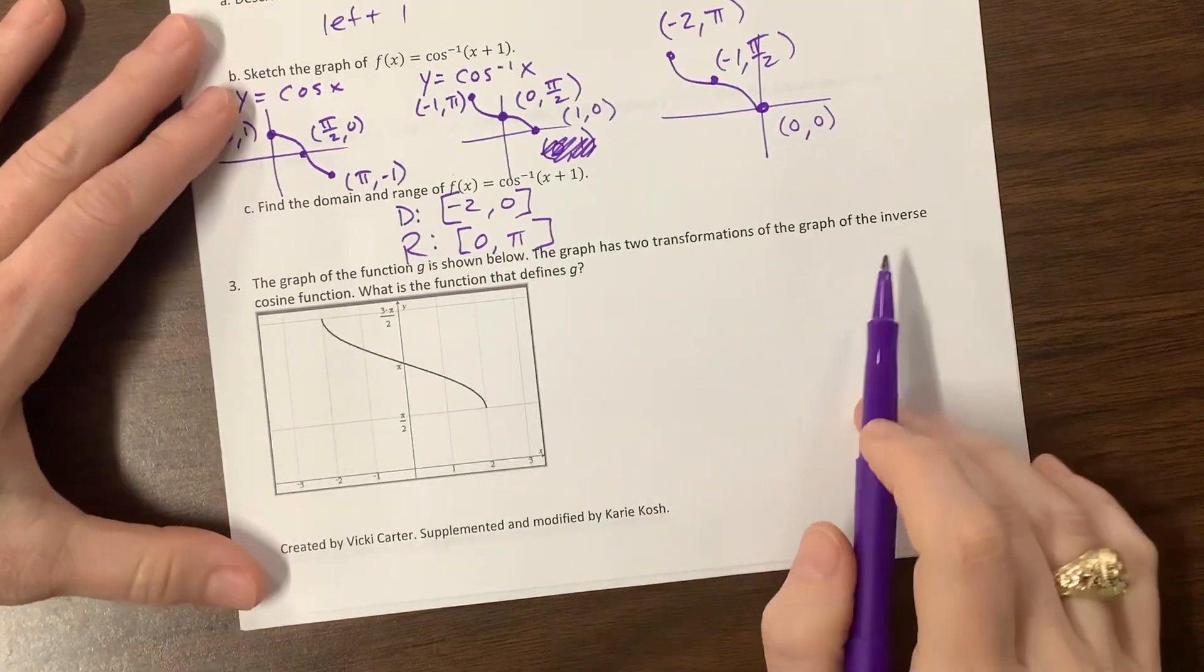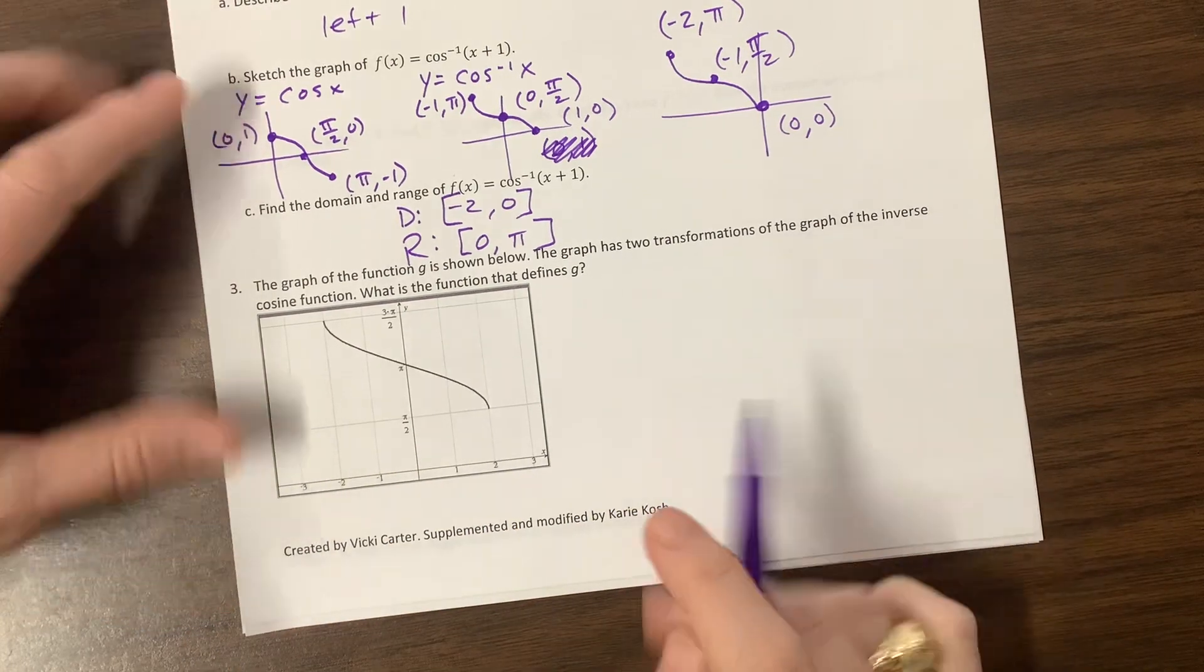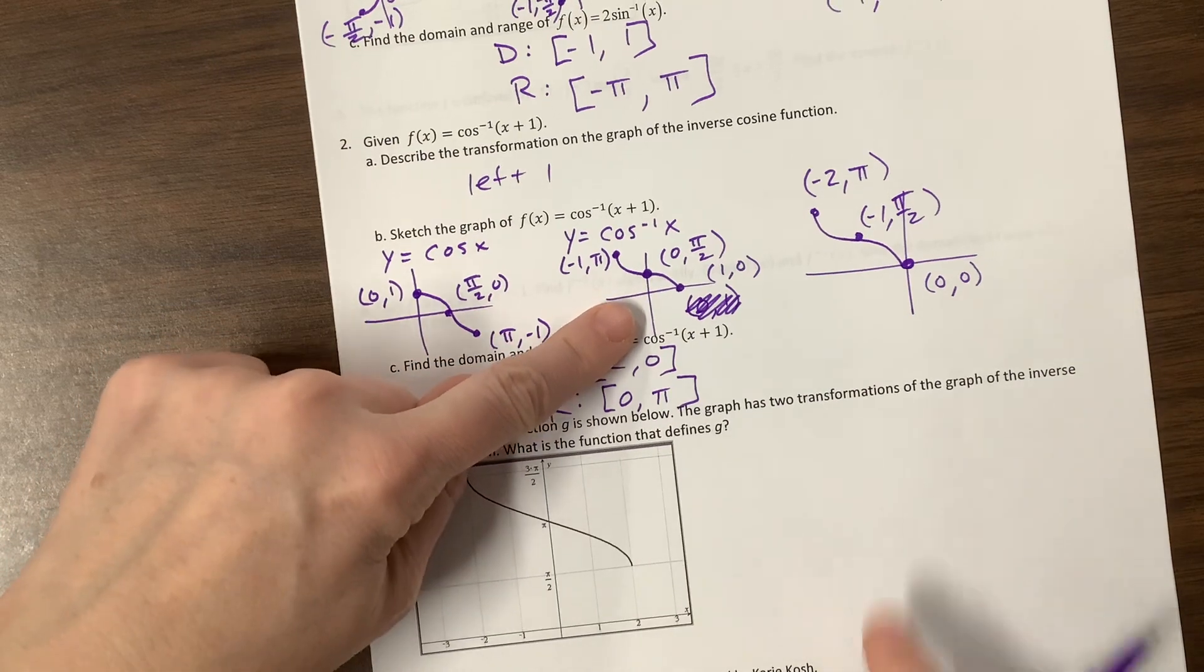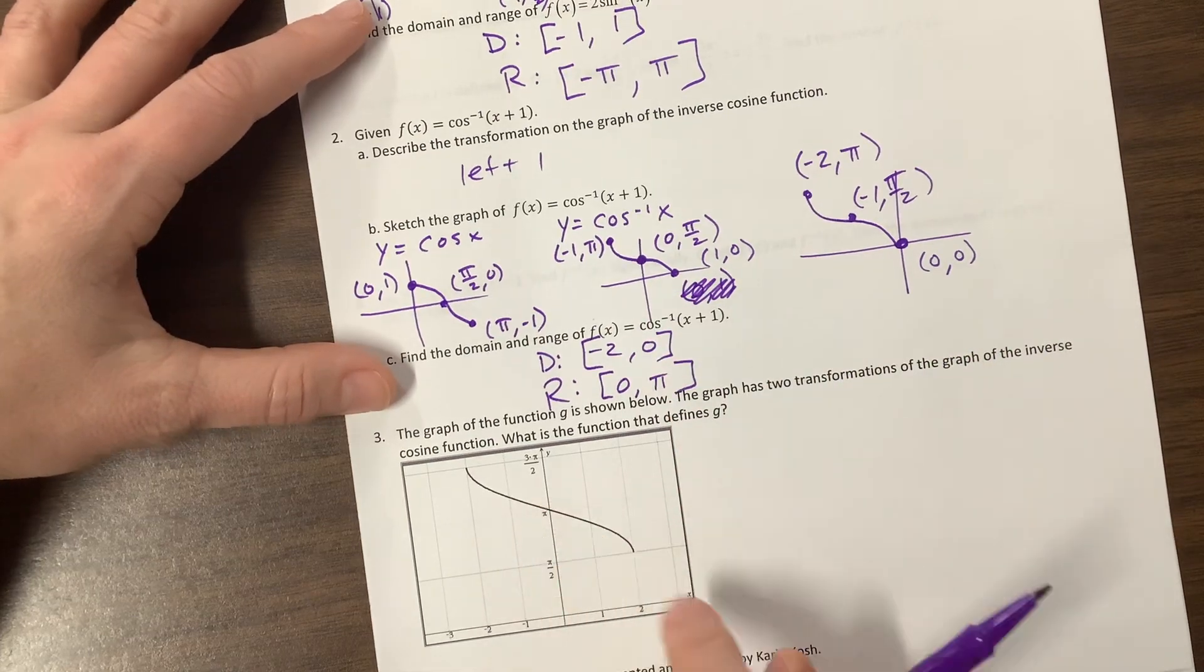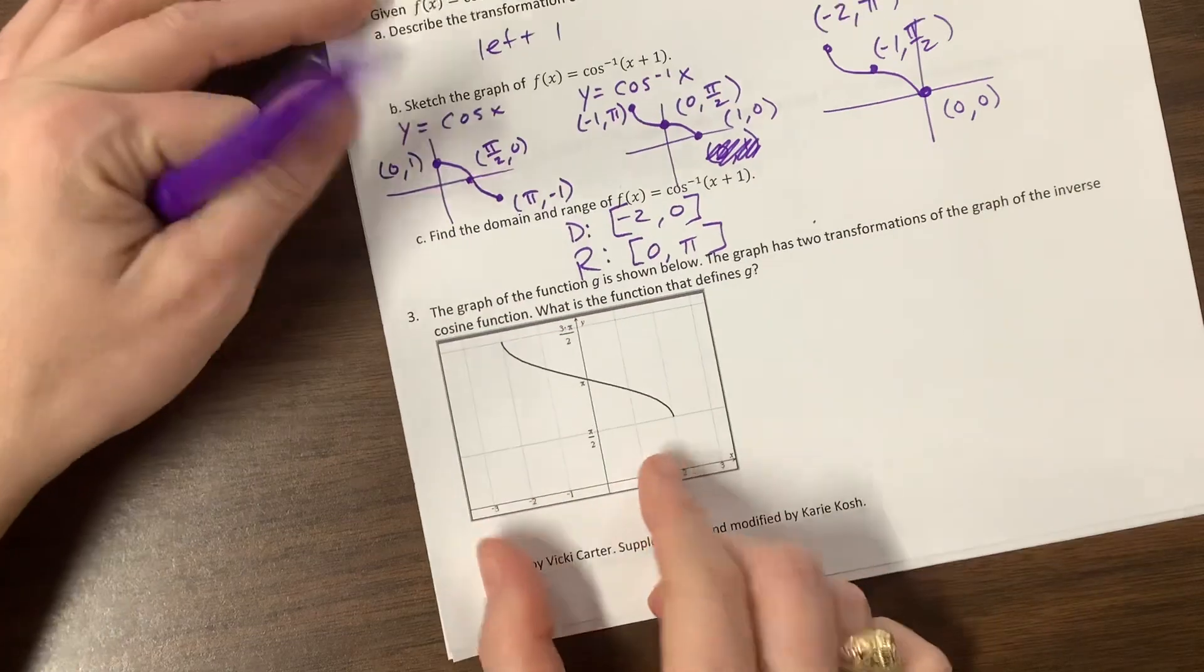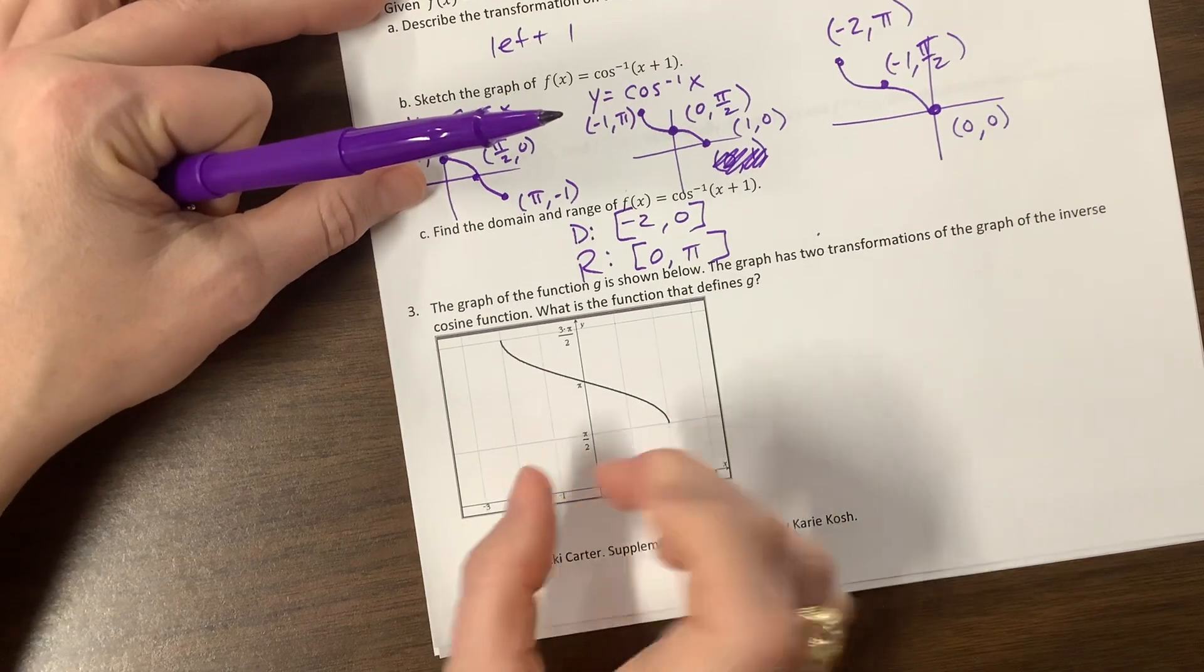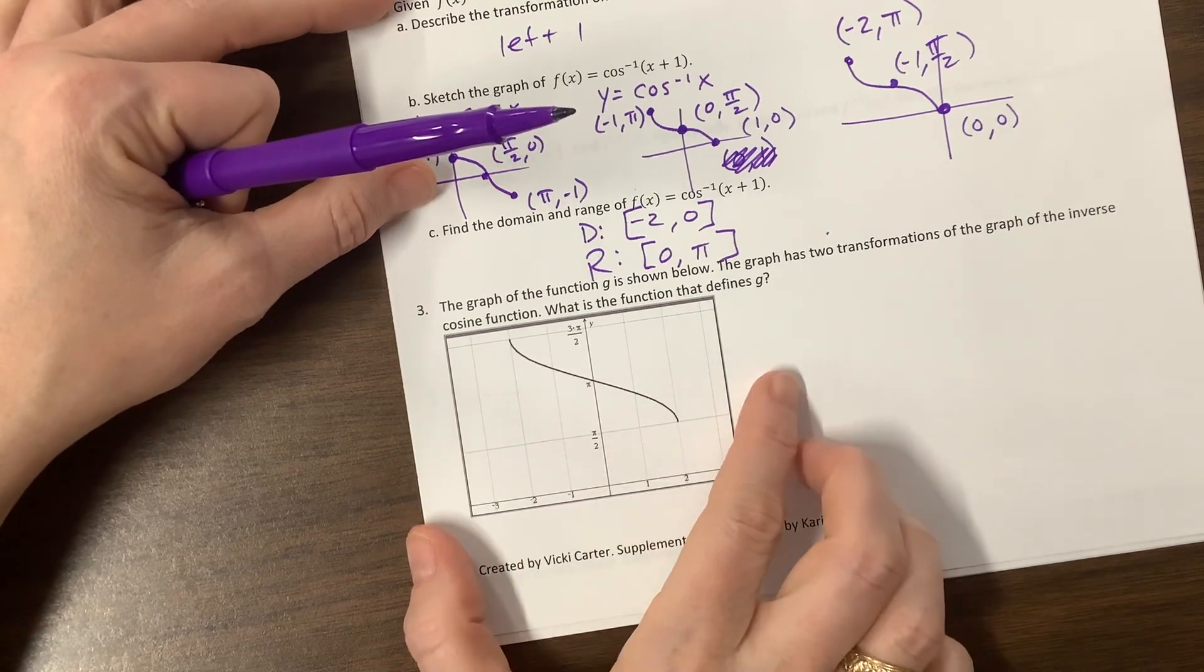Okay, the graph has two transformations of the inverse cosine function. So if the inverse cosine, I had drawn the parent function right here in my process of transforming it. And so I can notice that this has been shifted up. But it's also been stretched apart. So we're getting out here to two and negative two. So it's got a horizontal stretch. It's been dilated by a factor of two.